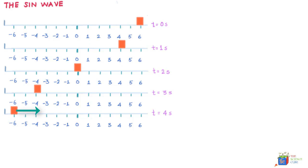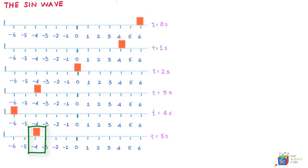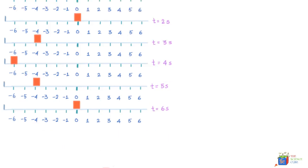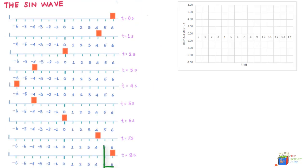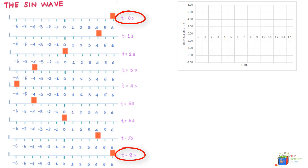Having reached the extreme left, the mass started moving back. At t = 5 seconds, X = minus 4.24 meters. At t = 6 seconds, its position was 0.01 meters — almost at the equilibrium position. At t = 7 seconds its position was 4.25 meters, and at t = 8 seconds X was again six meters — back to its original position. This is how the position of the mass looks at various times between t = 0 and t = 8 seconds, completing one full cycle.